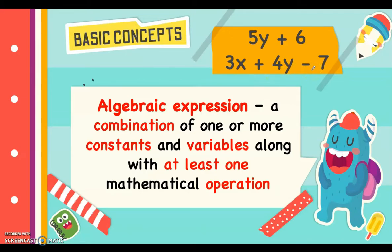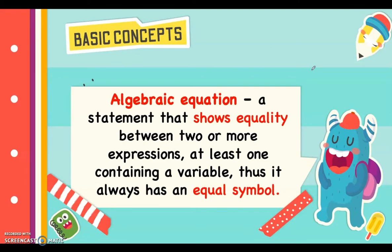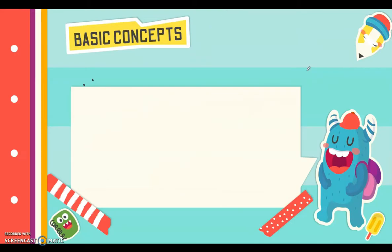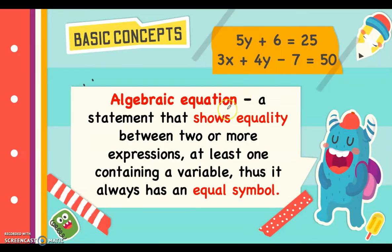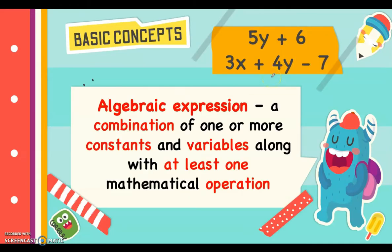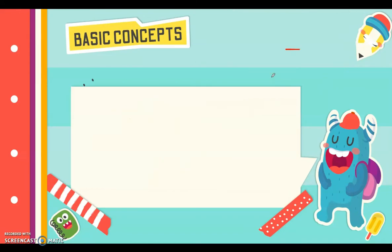On the other hand, we also have an algebraic equation. An algebraic equation is a statement that shows equality between two or more expressions, with at least one containing a variable. It always has an equal sign. For example, 5y plus 6 equals 25, or 3x plus 4y minus 7 equals 50. The difference between an expression and an equation is that an equation shows equality with an equal sign, while an expression does not.